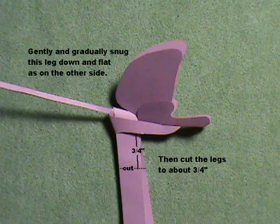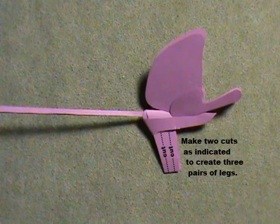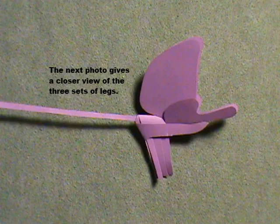Then cut the legs to about three quarters of an inch. After the legs are cut, cut along this dotted line to give the legs a little taper. Now make two cuts as indicated on the dotted lines to create three pairs of legs. The next photo gives you a closer view of the three sets of legs.